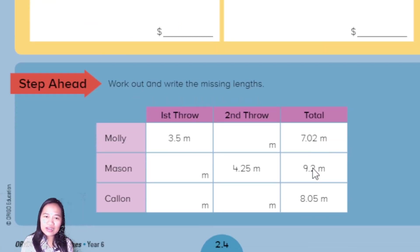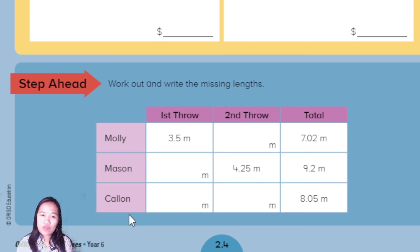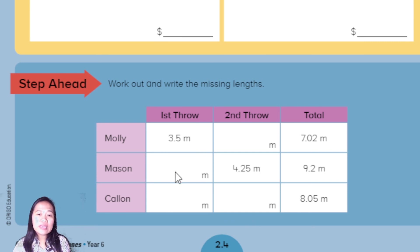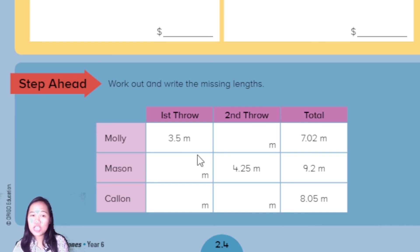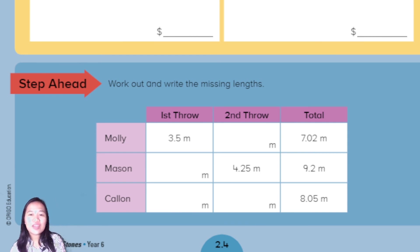Next, Molly, Mason, and Callan are competing. They each have a first round, second round, and total distance. You need to find the missing numbers. Since the total comes from addition, to find a missing value you use the opposite operation — subtraction. Thank you for watching, don't forget to complete your own work. See you next time. Goodbye!